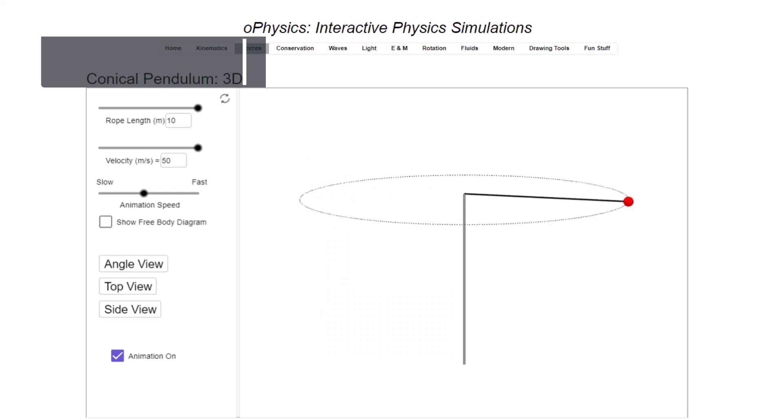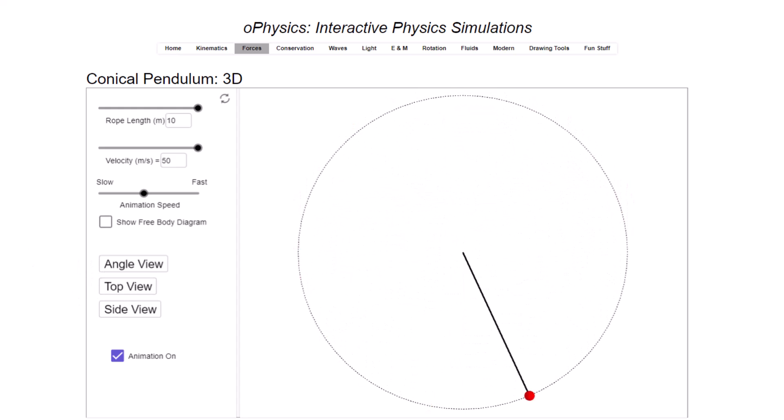The PhysX simulator represents this situation very well. You can see on the screen a red mass rotating around in a circular orbit at a fixed radius. From the top view this is clearly circular motion, as also can be seen from the side view.